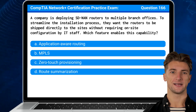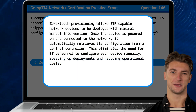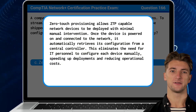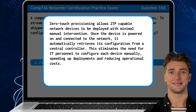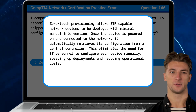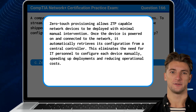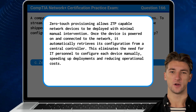The answer is C: Zero-Touch Provisioning. Zero-Touch Provisioning allows ZTP-capable network devices to be deployed with minimal manual intervention. Once the device is powered on and connected to the network, it automatically retrieves its configuration from a central controller. This eliminates the need for IT personnel to configure each device manually, speeding up deployments and reducing operational costs.